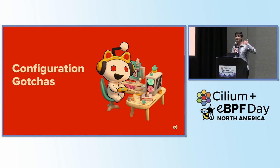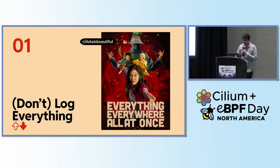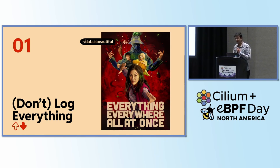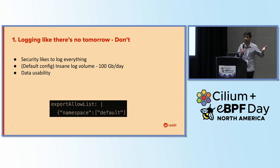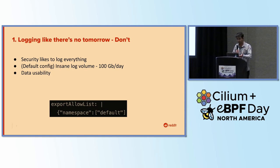The first gotcha is about logging everything. Like with any tool, we want to log everything, everywhere, all at once — but that's not a good idea with Tetragon. Finding a needle in a haystack is challenging, and finding a needle in a stack of haystacks is even more challenging. Using the default config, you'll end up with so many logs — we had around 100 gigs of logs every day just on the test cluster, which are not very usable. Be aware of the namespace flags: if you remove the flag specifying which namespaces to log, you'll end up logging all namespaces, which you probably don't want.